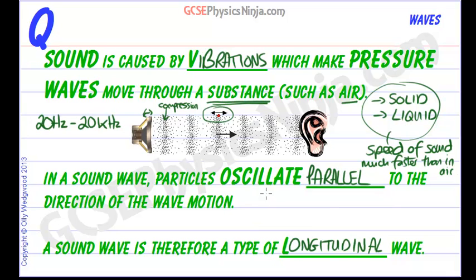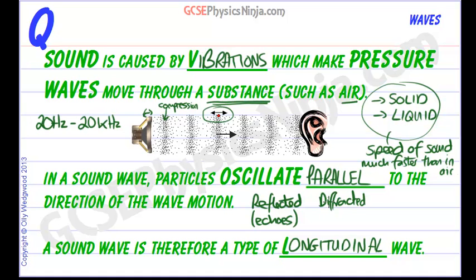Sound waves can also be reflected off surfaces — we call that echoes. They can also be diffracted, meaning they spread out if they go through a gap or around an object. If the object or the gap is about the same size as the wavelength — the distance from one compression to the next — then you'll see a lot of diffraction.